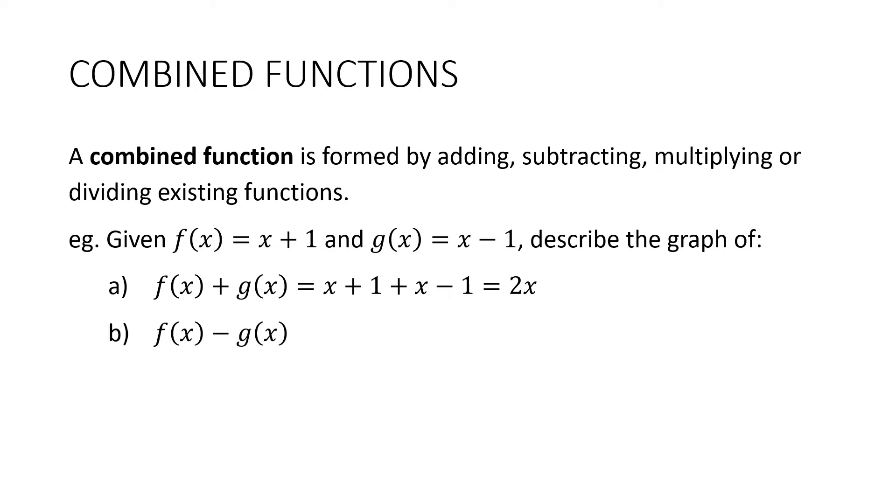How about f(x) - g(x)? And be careful when substituting in here because we've got two terms, we need to put that in brackets. So we end up with x + 1 take away x + 1. And those x's will cancel out and we end up with 2. We end up with y = 2. Again, it's a straight line, but it's a horizontal line.